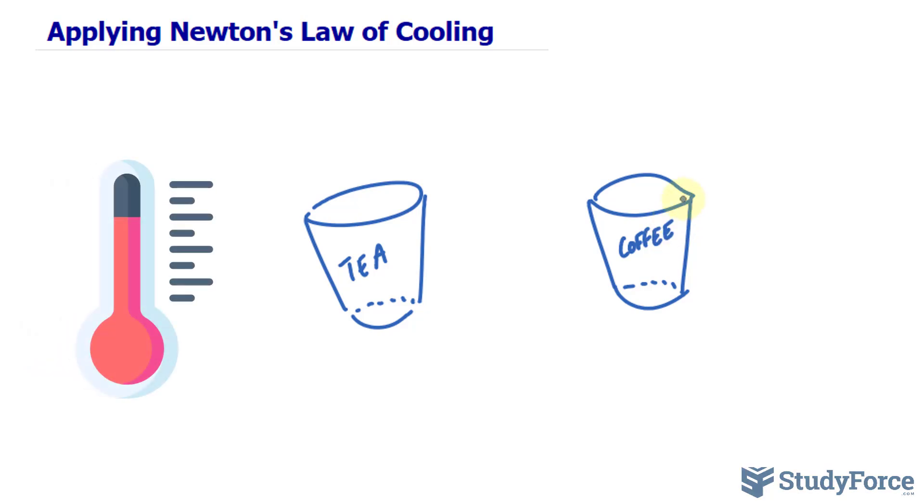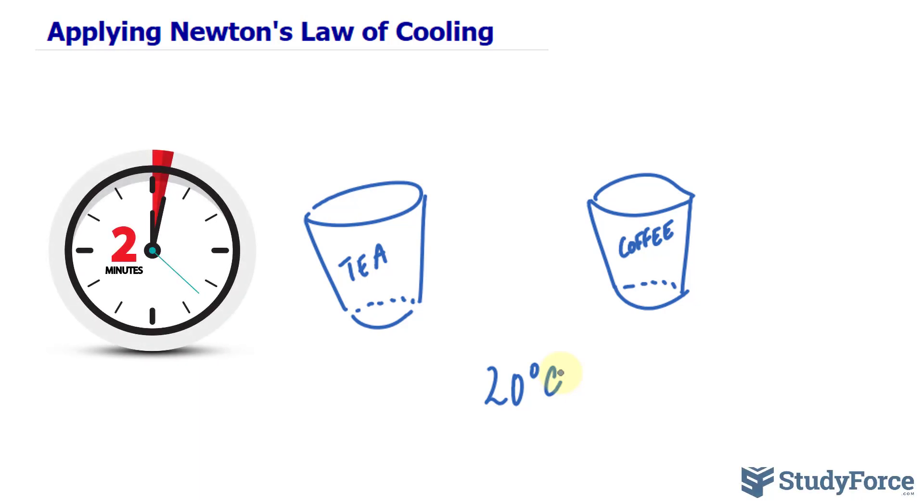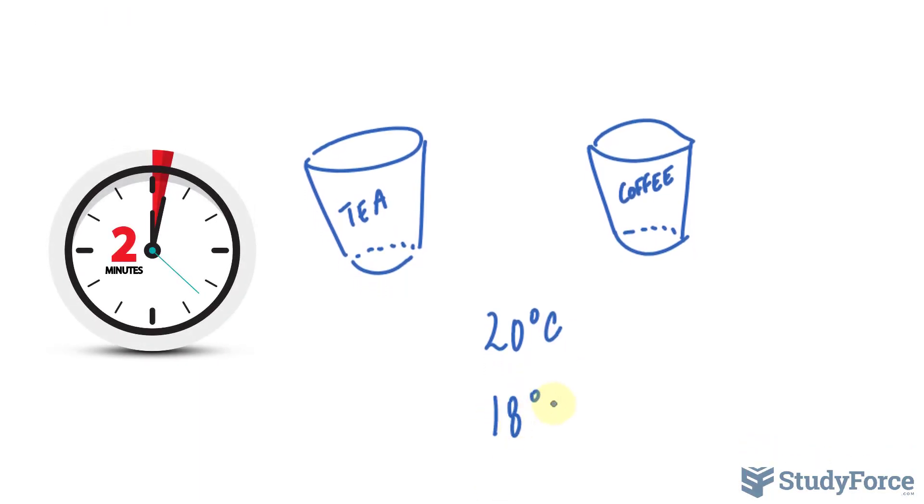The difference in temperature between the tea and the coffee is 20 degrees Celsius. So one of these is hotter than the other by 20 degrees. After two minutes, the temperature difference becomes 18 degrees.